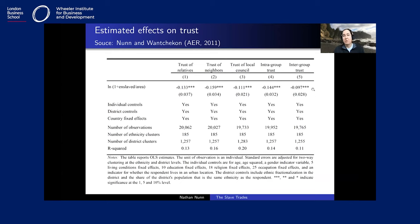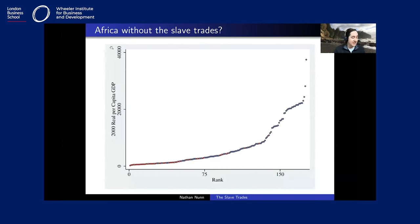Counterfactually, without the slave trade, family and friends would be quite trusting of one another, and the slave trade really eroded that — even more so than inter-group trust, where you might counterfactually have had some but more limited trust of those further from you, giving less scope for the slave trade to erode it.